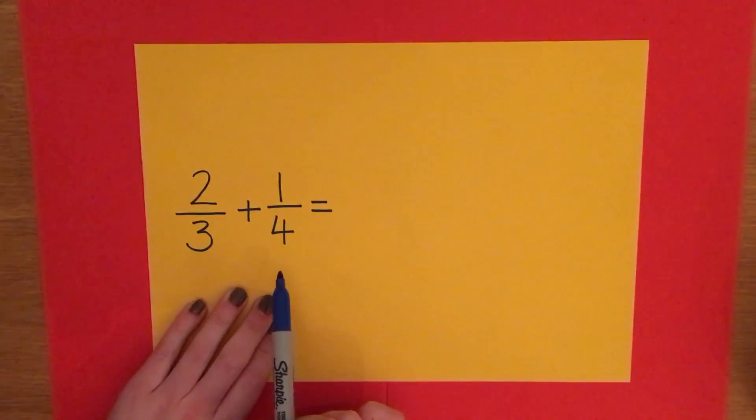Now to start off the process of adding these fractions, we need to find the lowest common denominator or the lowest common multiple. And to do this we normally multiply the denominators together.